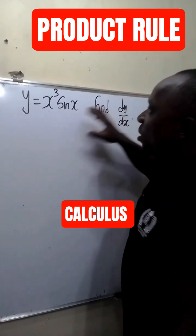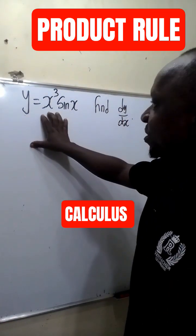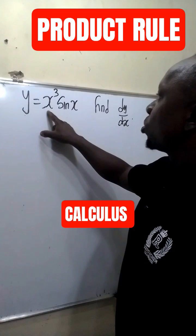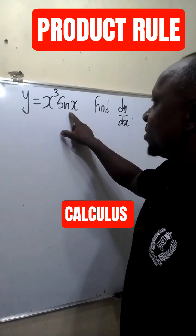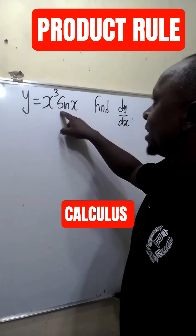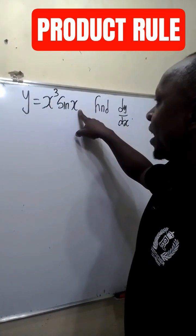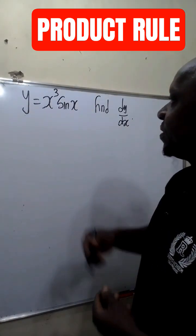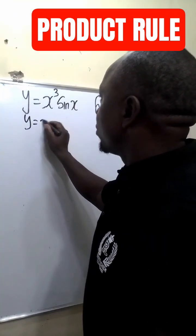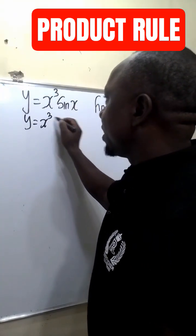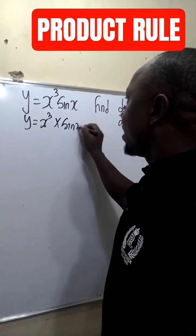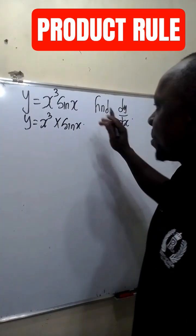Let's find the derivative of this function. This function y is a product of two functions: x raised to the power 3 and sine x. This implies y is equal to x raised to the power 3 times sine x.